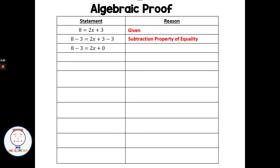Continuing through the proof: when we subtract 3 from both sides, we're showing the subtraction property of equality. Then 3 minus 3 gives 0, which uses the additive inverse property. From additive inverse, we have 8 minus 3 equals 2x. Adding 0 just gives us the same as what we started with — that's the additive identity property. Then, substituting 8 minus 3, I can substitute 5 in for 8 minus 3 — that is the substitution property.